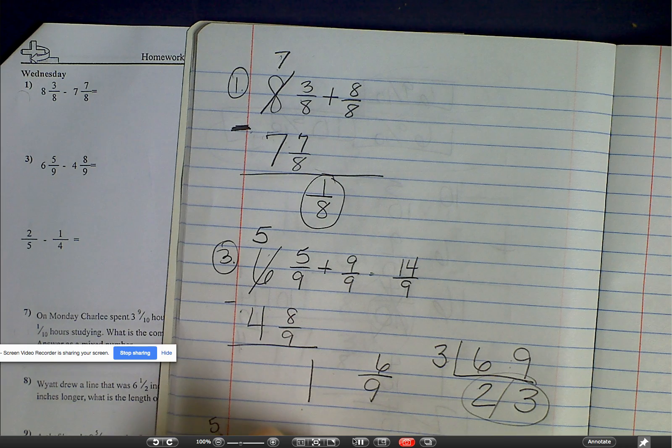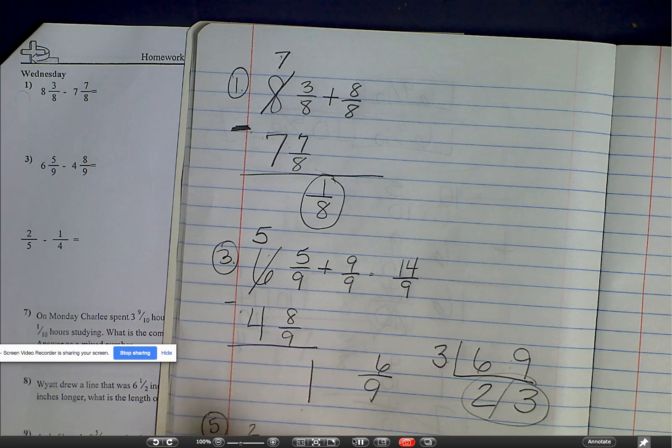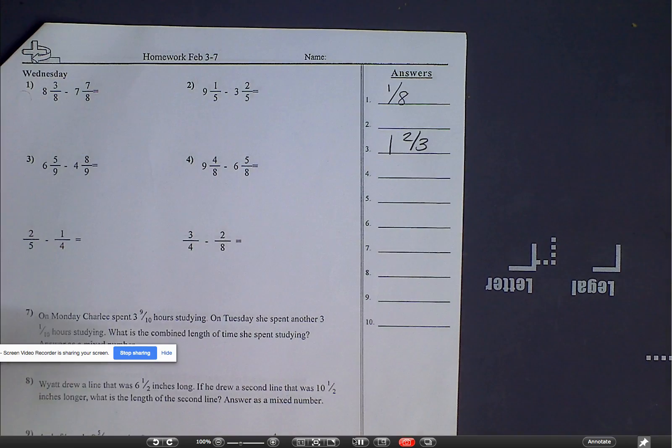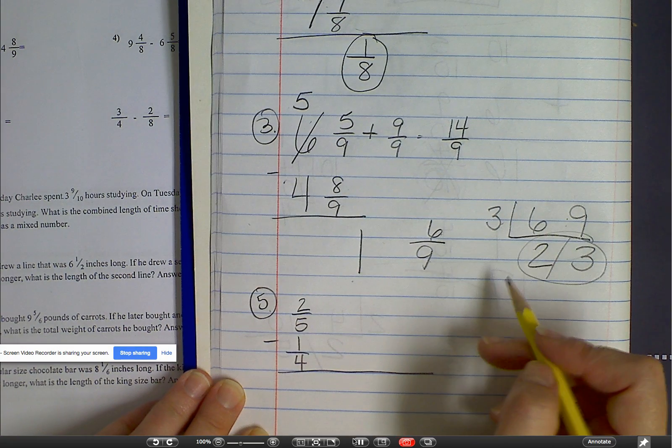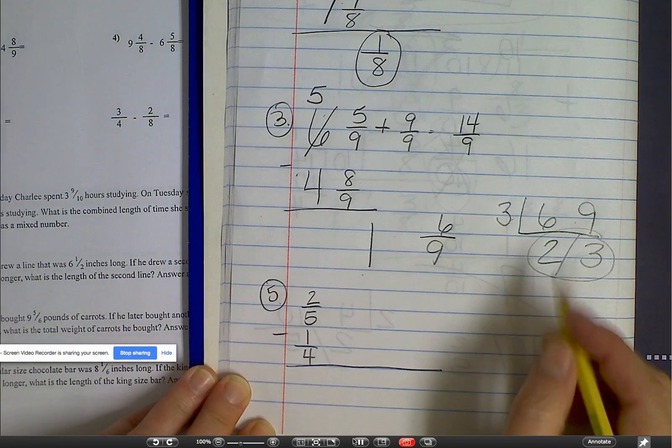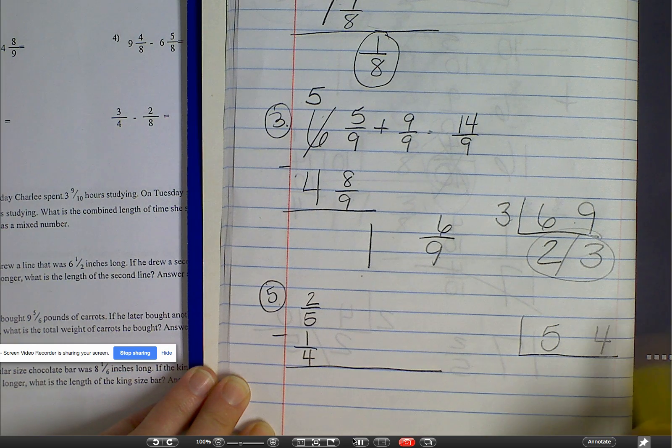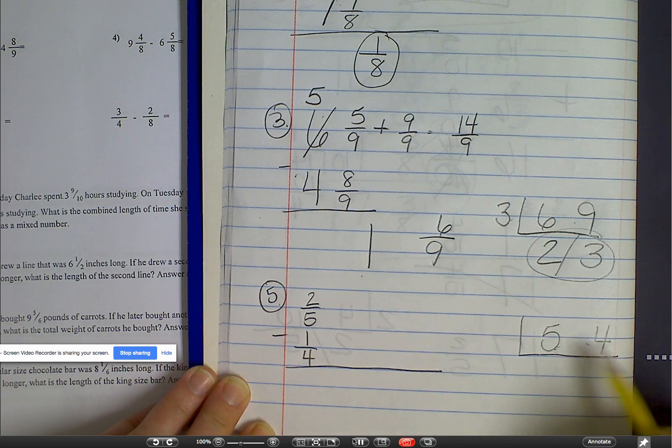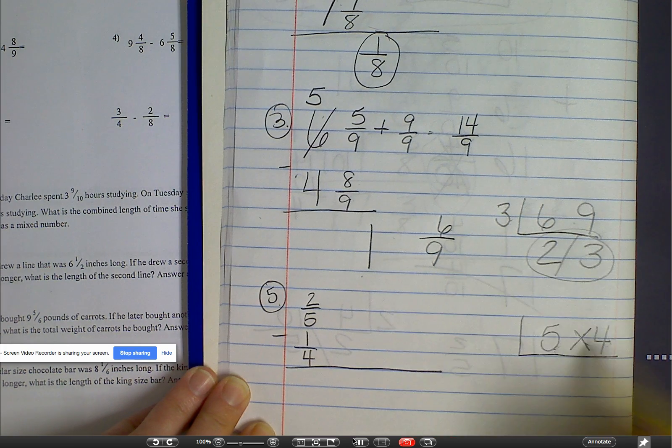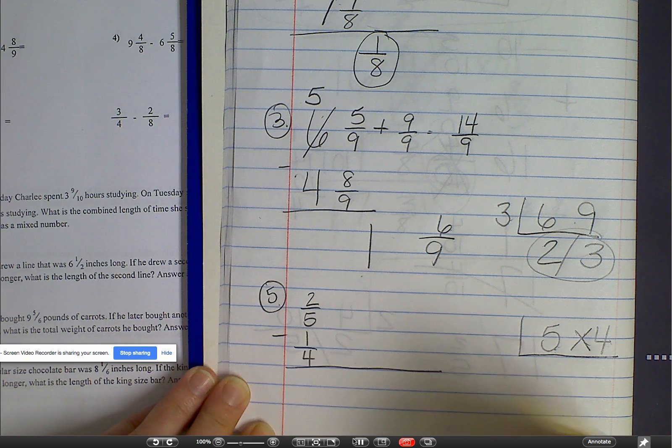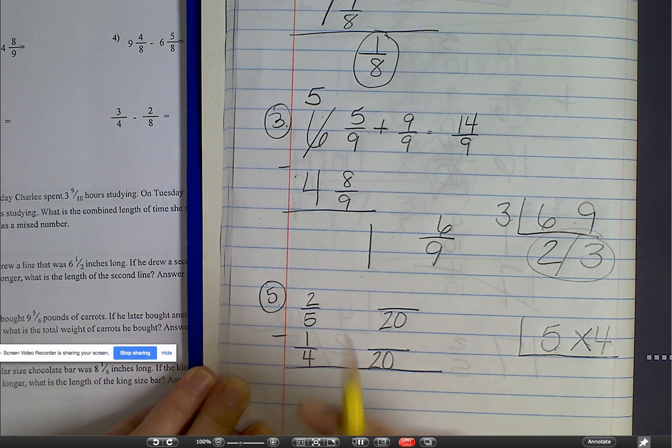All right, we're on number five already. Number five says two-fifths minus one-fourth. On this one, we don't have the same denominator. So first of all, I need to come up with the least common denominator. So I'm going to use the ladder. I put the five and the four in the ladder. Is there anything I can pull out that will both go into five and four? No. If there's nothing you can pop or pull out, then you just times those together, right? So five times four is 20.